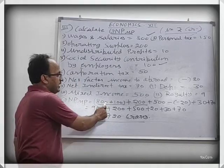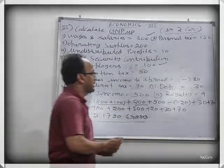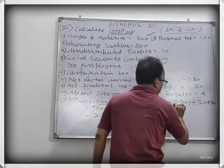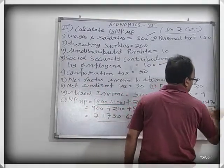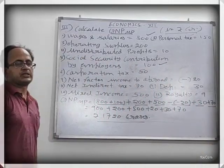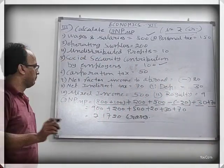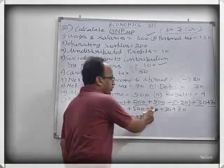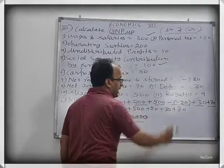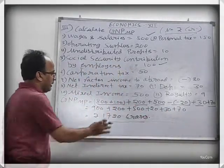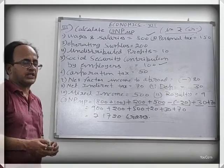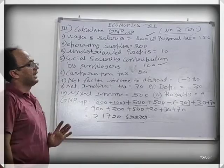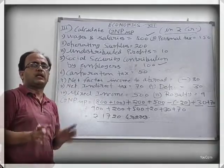Depreciation is given as 30 and Net Indirect Tax is given as 70. So to repeat: Compensation of Employees plus Operating Surplus plus Mixed Income plus NFIA (into account) plus Depreciation plus Net Indirect Tax. Their sum is GNPMP: 900 plus 200 plus 500 plus 20 plus 30 plus 70 equals 1720. So 1720 crore is the GNPMP found from the income method.